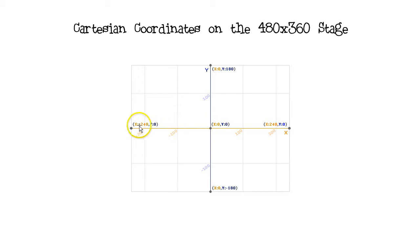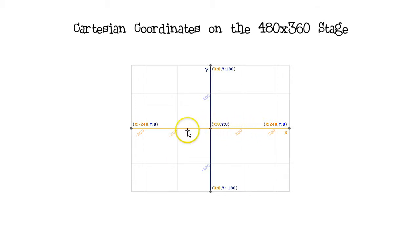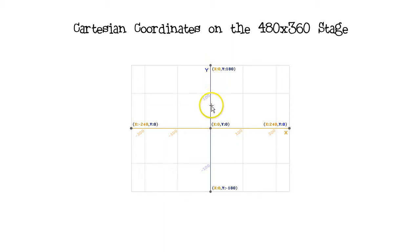The x-axis goes left and right. Zero is at the center. As the x-value gets larger, the location is further to the right, and as the x-value gets smaller, the location is further to the left. The y-axis goes up and down. Zero is at the center. As the y-value gets larger, the location is further up, and as the y-value gets smaller, the location is further down.